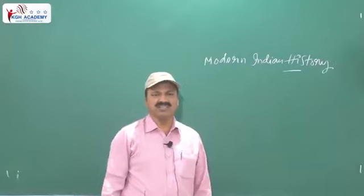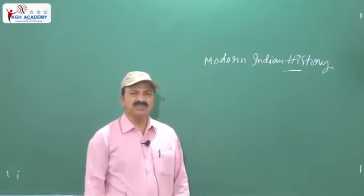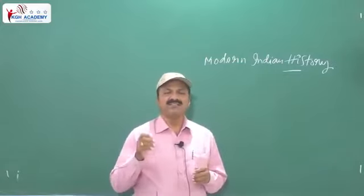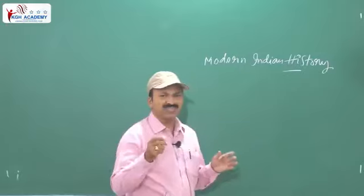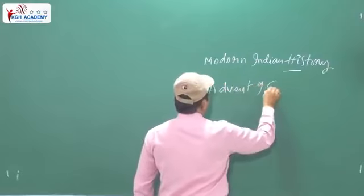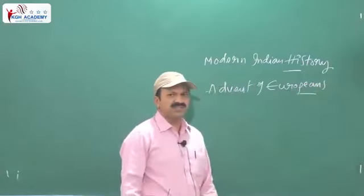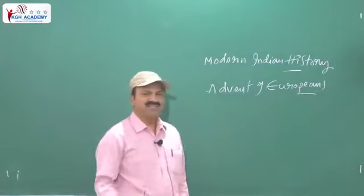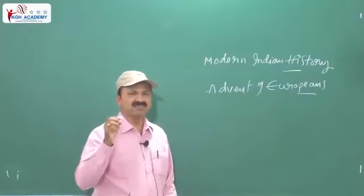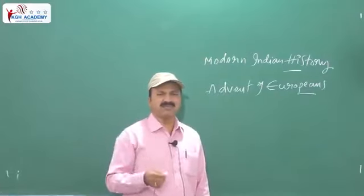Modern Indian history begins with the decline of Mughals — how the Mughal Empire came to an end. After that, the advent of Europeans — how these Europeans came to India. The Portuguese were the first people to come to India for the purpose of trade and commerce.